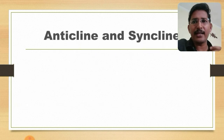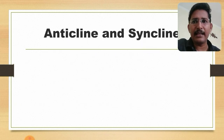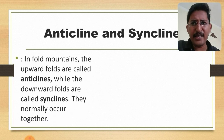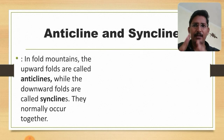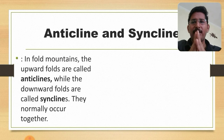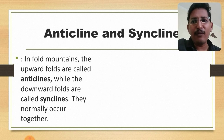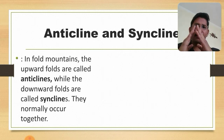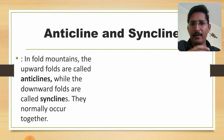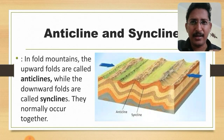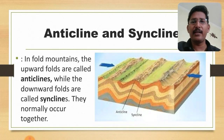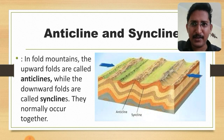Now let's see something related to that: anticlines and synclines. In fold mountains, the upward folds are called anticlines, while the downward folds are called synclines. They normally occur together — when something is going up, the other part should go down. Here is a picture to help you understand what anticlines and synclines are, showing how these tectonic movements take place.